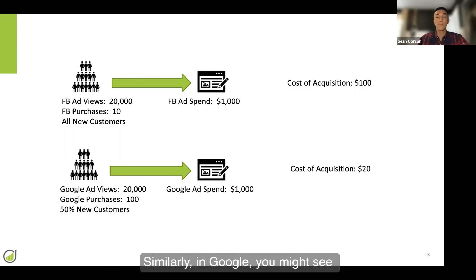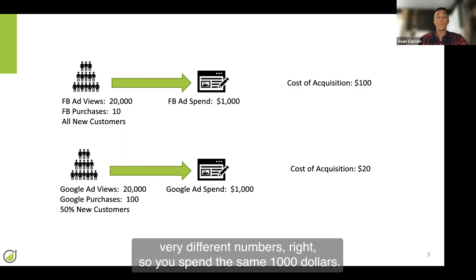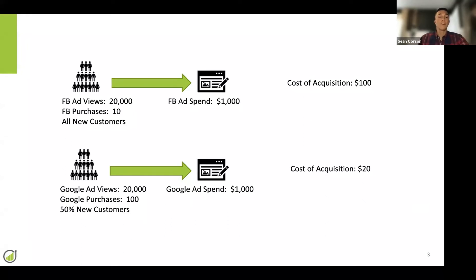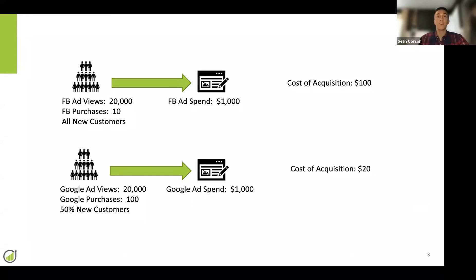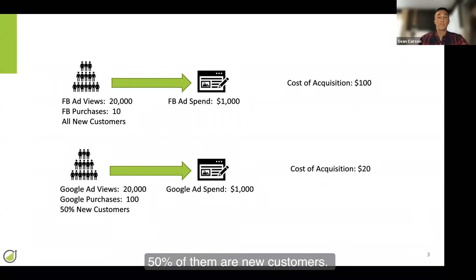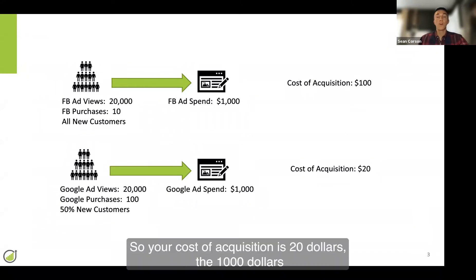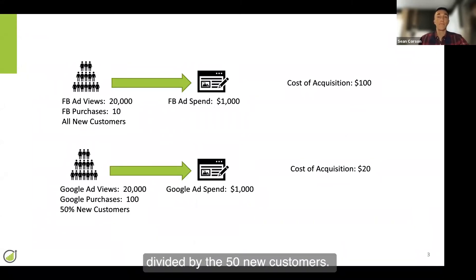Similarly, in Google, you might see very different numbers. So you spend the same $1,000, but in this case you get 100 purchasers. 50% of them are new customers, so your cost of acquisition is $20 — the $1,000 divided by the 50 new customers.